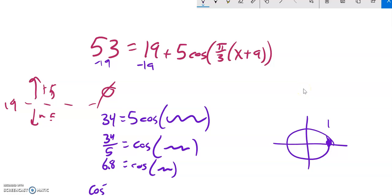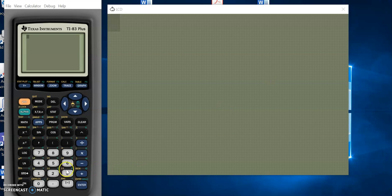If I try to go inverse cosine of 6.8 on my calculator, I will get a domain error.